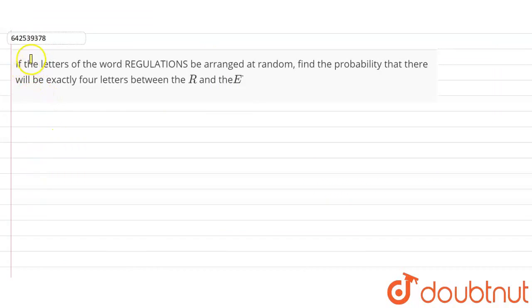The question says if the letters of the word REGULATIONS are arranged at random, find the probability that there will be exactly four letters between R and E. The word REGULATIONS has a total of 11 letters.